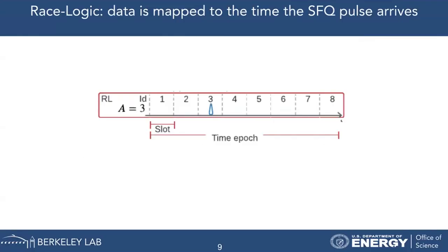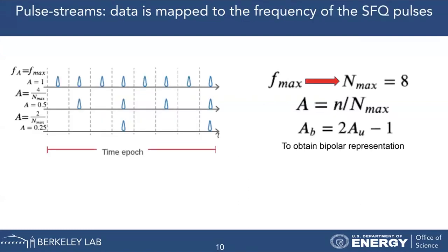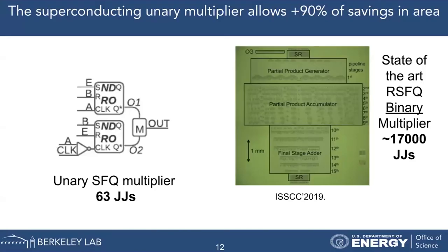In Unary SFQ, we represent data in a different way. First, we represent data in the temporal domain — if I want to represent the number 3, the SFQ pulse arrives at time 3. The other way to represent data is in the frequency of a pulse stream: if I want to represent the number 1, I use the maximum frequency; for 0.5, I use half the maximum frequency. With this data representation, I can build multipliers, adders, nodes — the things needed to build computers.